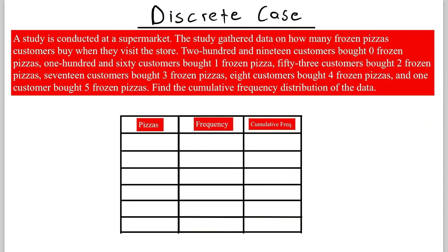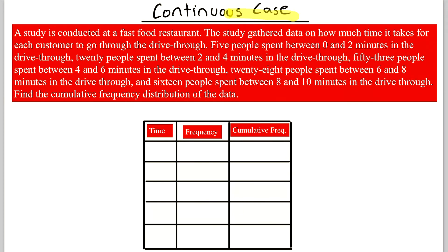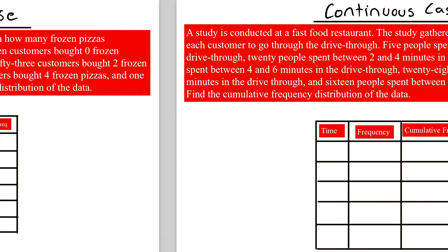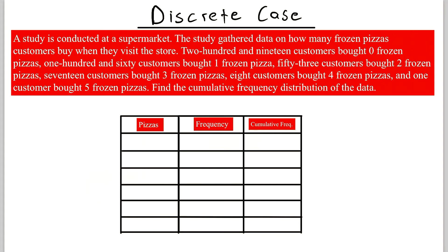In today's video we'll be going over two examples of how to find the cumulative frequency distribution of a set of data. The first example is a discrete case and the second example will be a continuous case. I'm not going to spend too much time talking about the difference between discrete and continuous — I'll explain them a little in the description, or you're free to request a lesson on it.